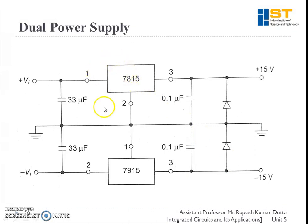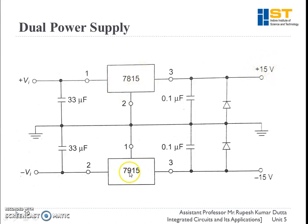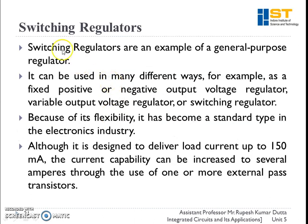This is a dual power supply circuit needed to operate an op-amp, since op-amps require both a positive and a negative voltage supply. Here we can use the 7815 series as the positive voltage regulator and the 7915 series as the negative fixed voltage regulator. With these we can obtain a positive 15V and a negative 15V output. This has very wide application when working with op-amps.